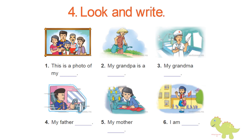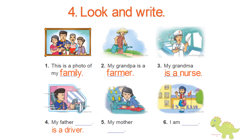Activity 4: Look and write. 1. This is a photo of my family. 2. My grandpa is a farmer. 3. My grandma is a nurse. 4. My father is a driver. 5. My mother is a factory worker. 6. I am a pupil.